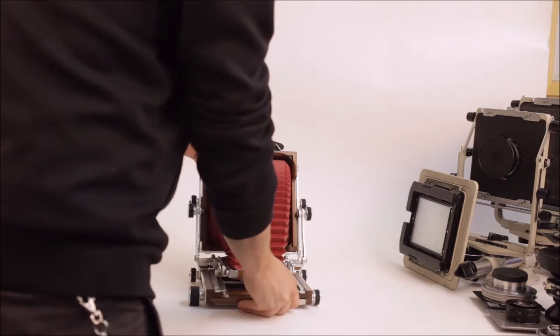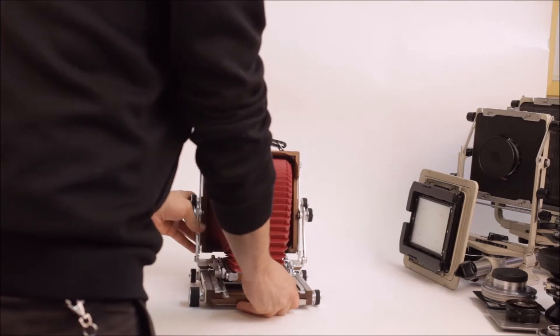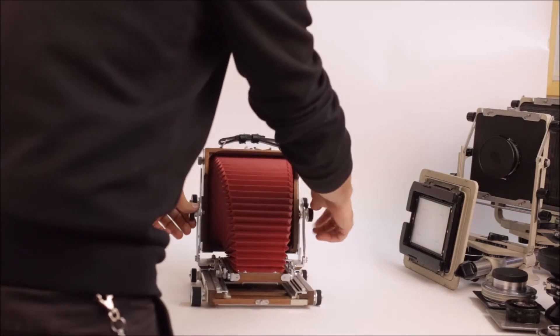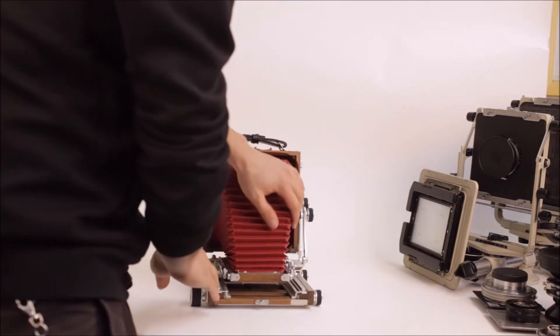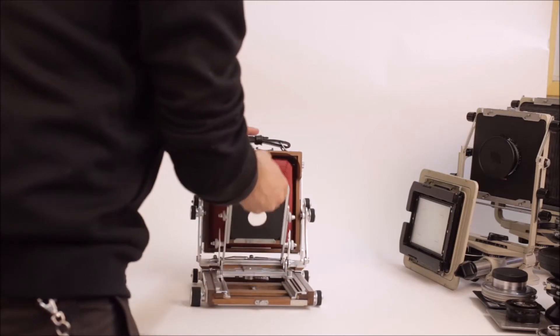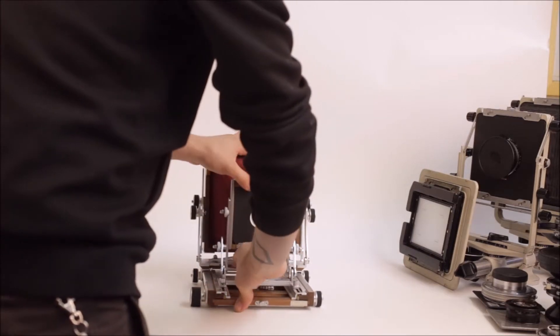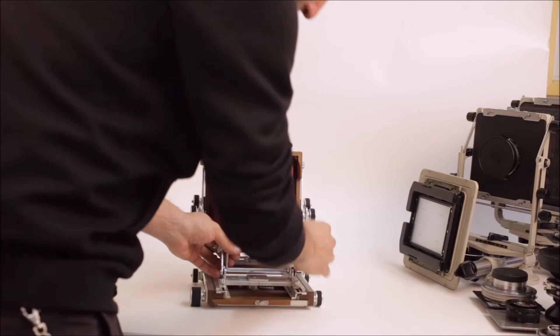Another new thing is Shenhao is now running cameras with optional red bellows, and this one is just fabulous. The material is the same type of material that they use on the black bellows. We're fans of Shenhao bellows, but this is real nice.